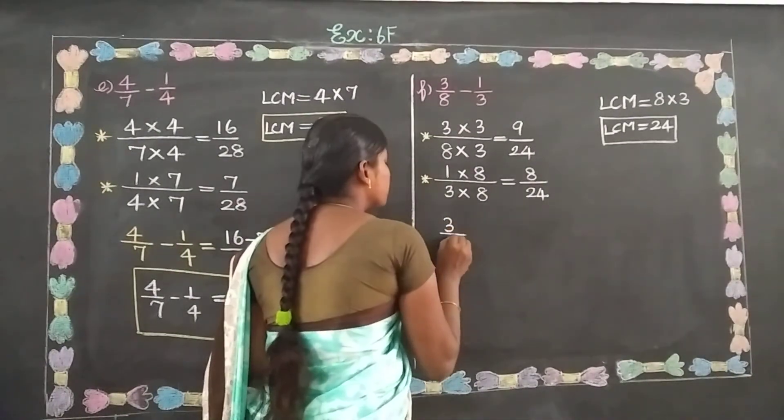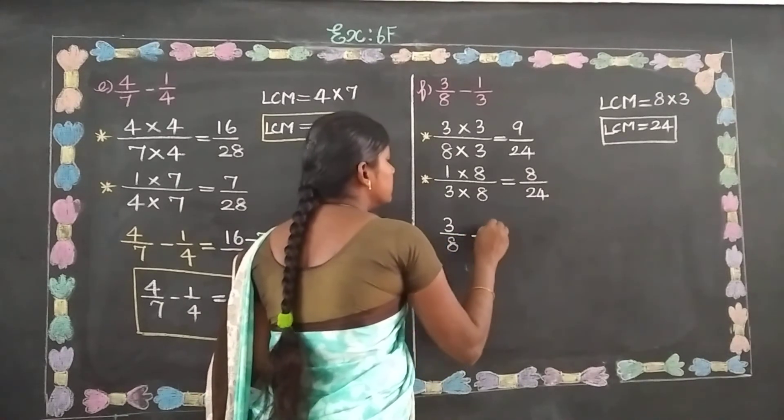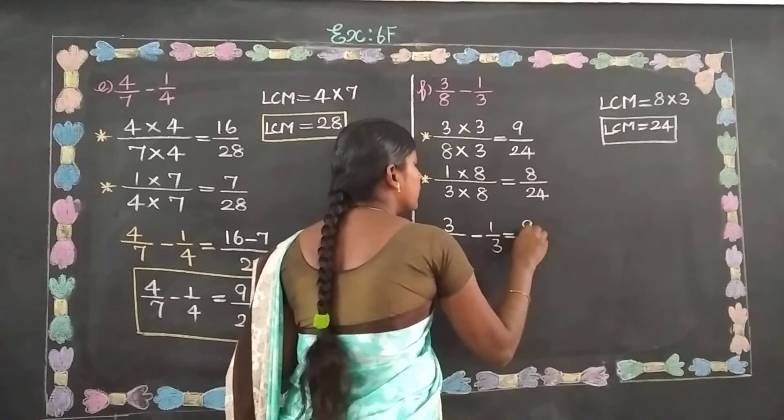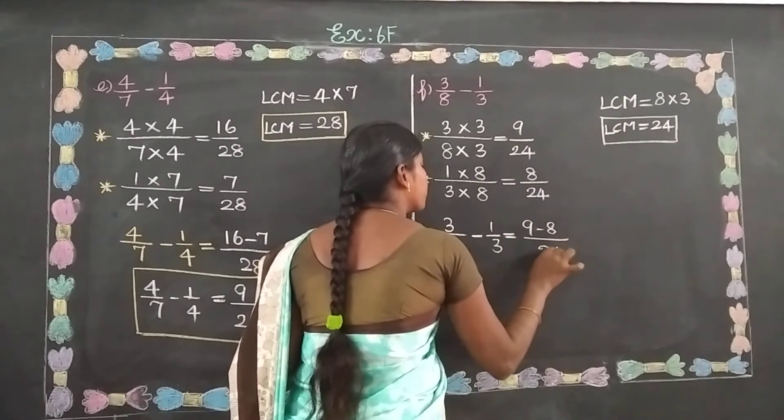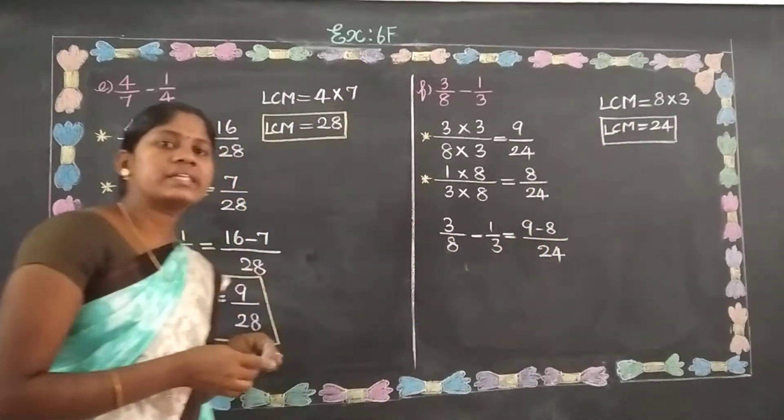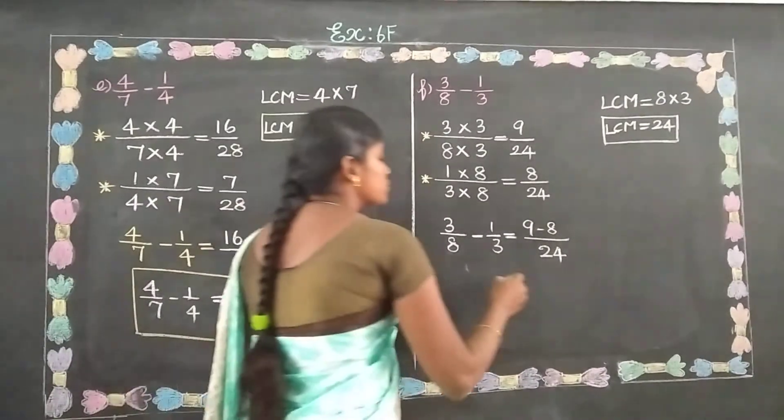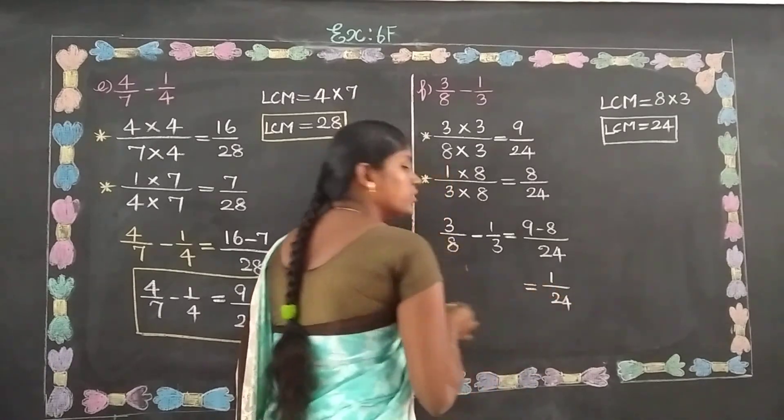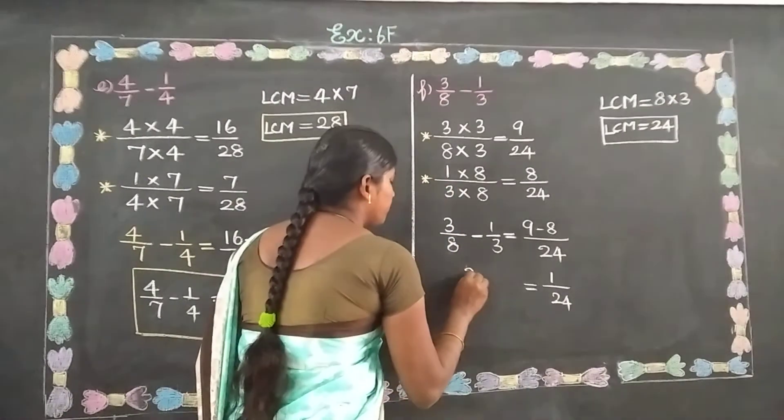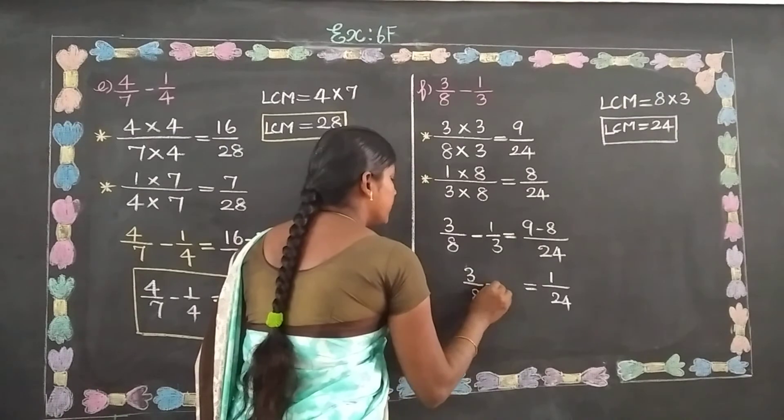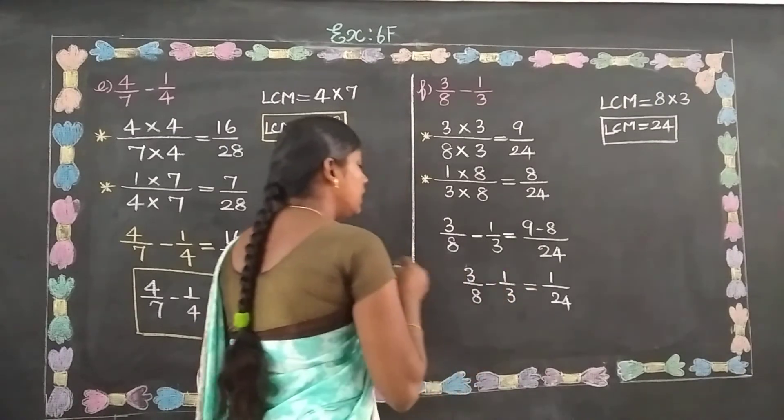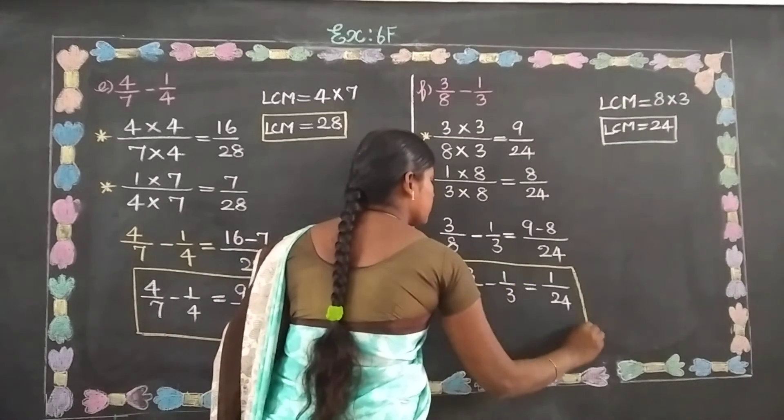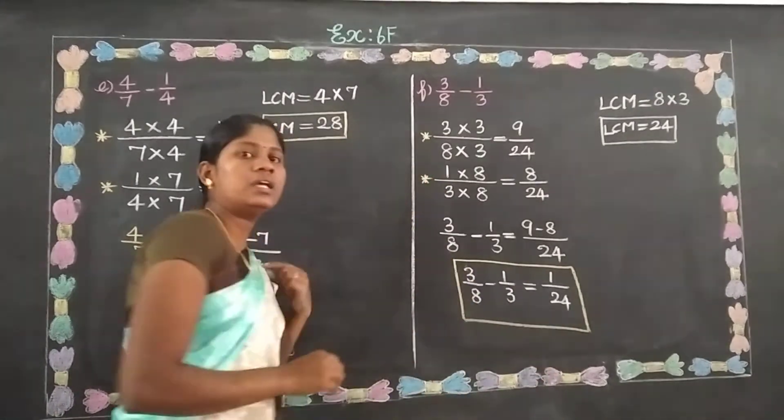Subtraction formula. 3 by 8 minus 1 by 3 equals 9 minus 8 by 24. So 1 by 24 is the final answer. 3 by 8 minus 1 by 3 equals 1 by 24.